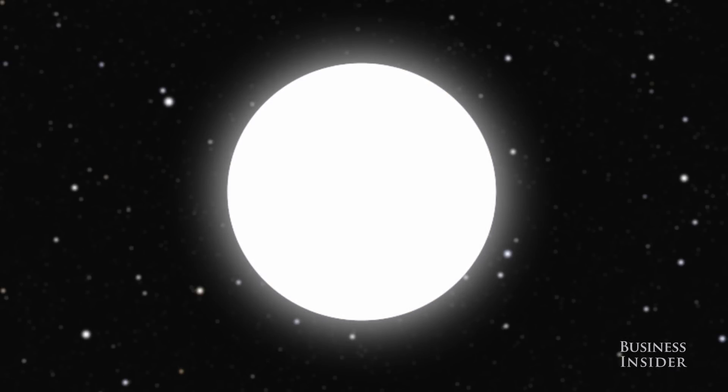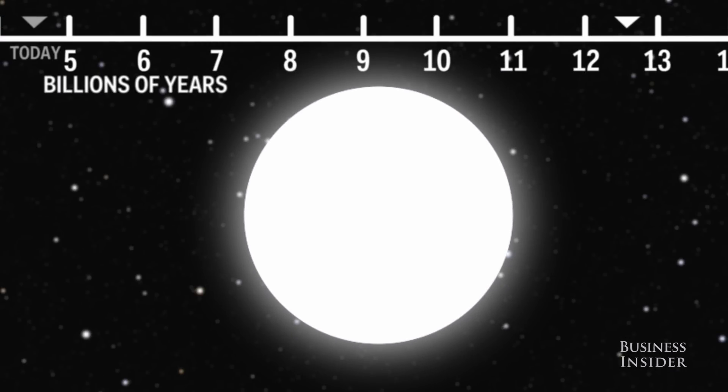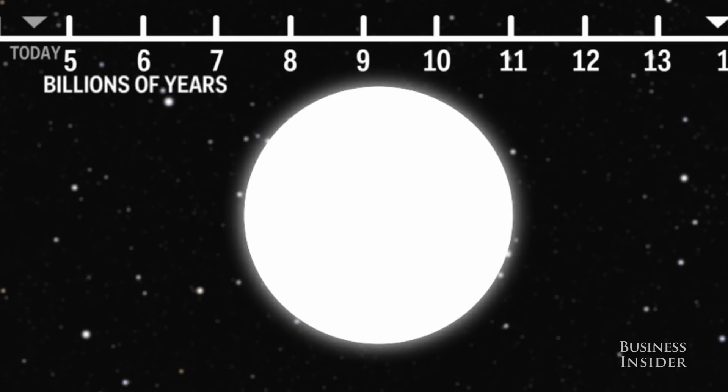This core is called a white dwarf. The Sun will spend the rest of its days as a white dwarf, slowly cooling and dimming as time passes. By this point, Earth will be completely inhospitable.